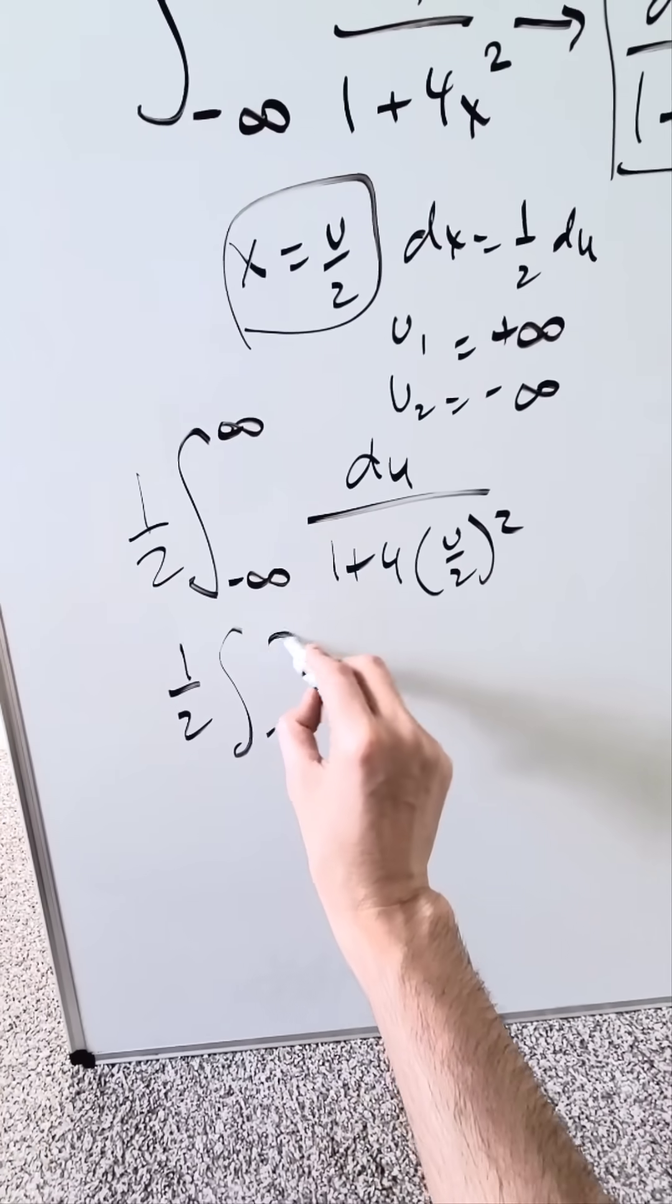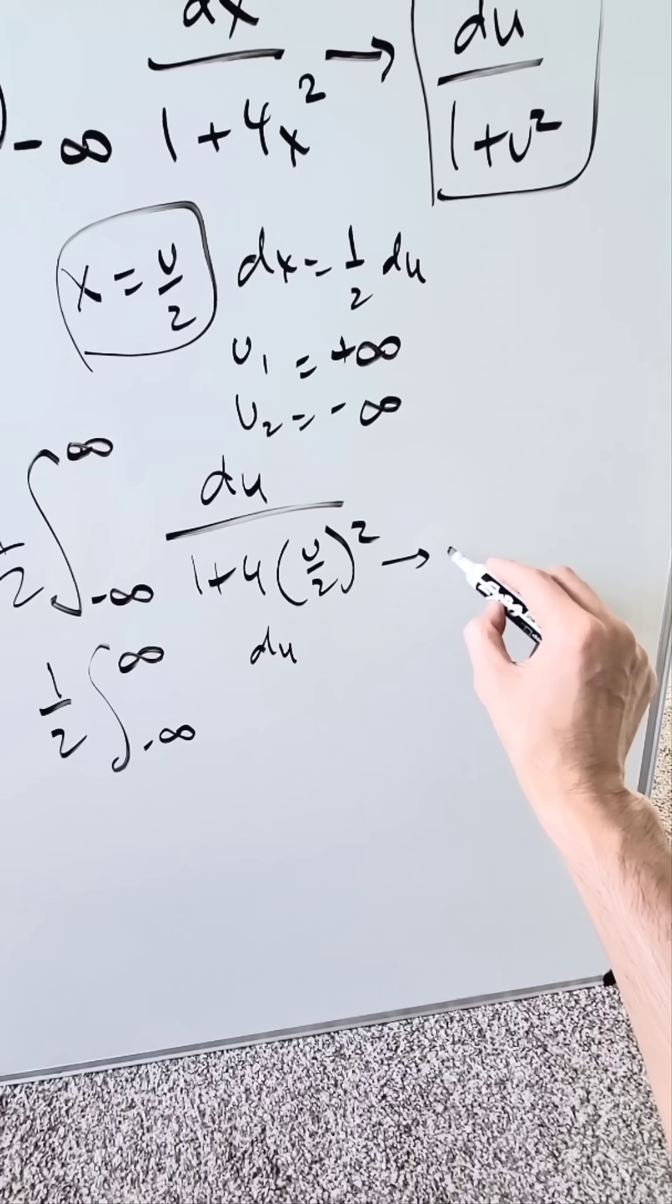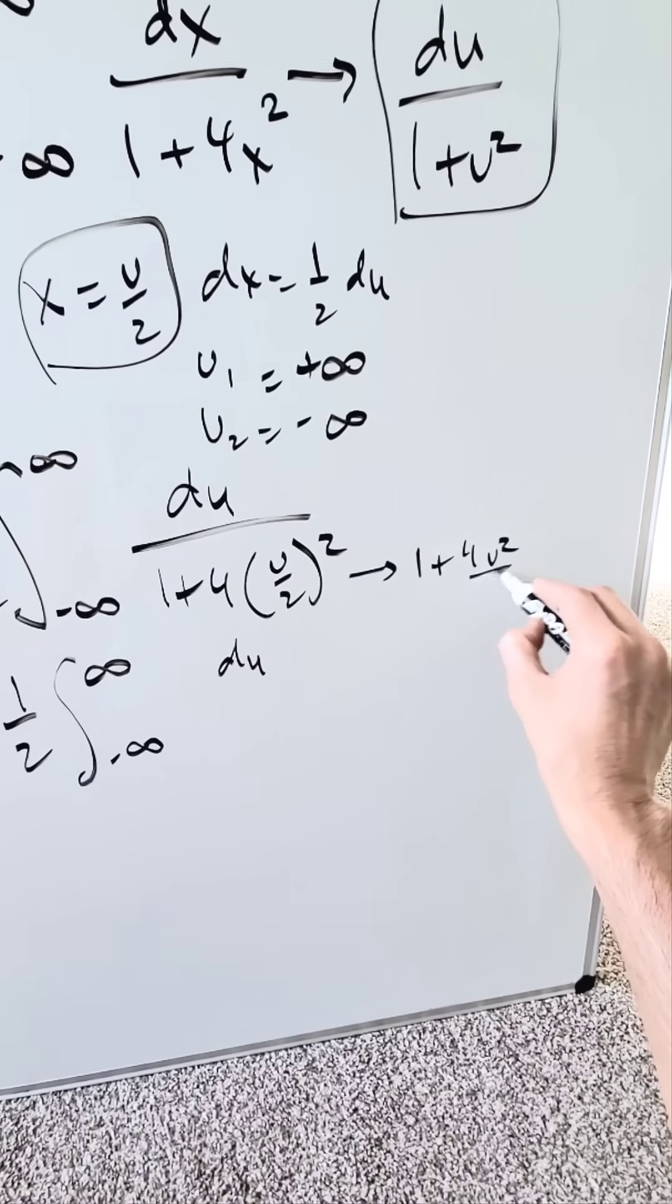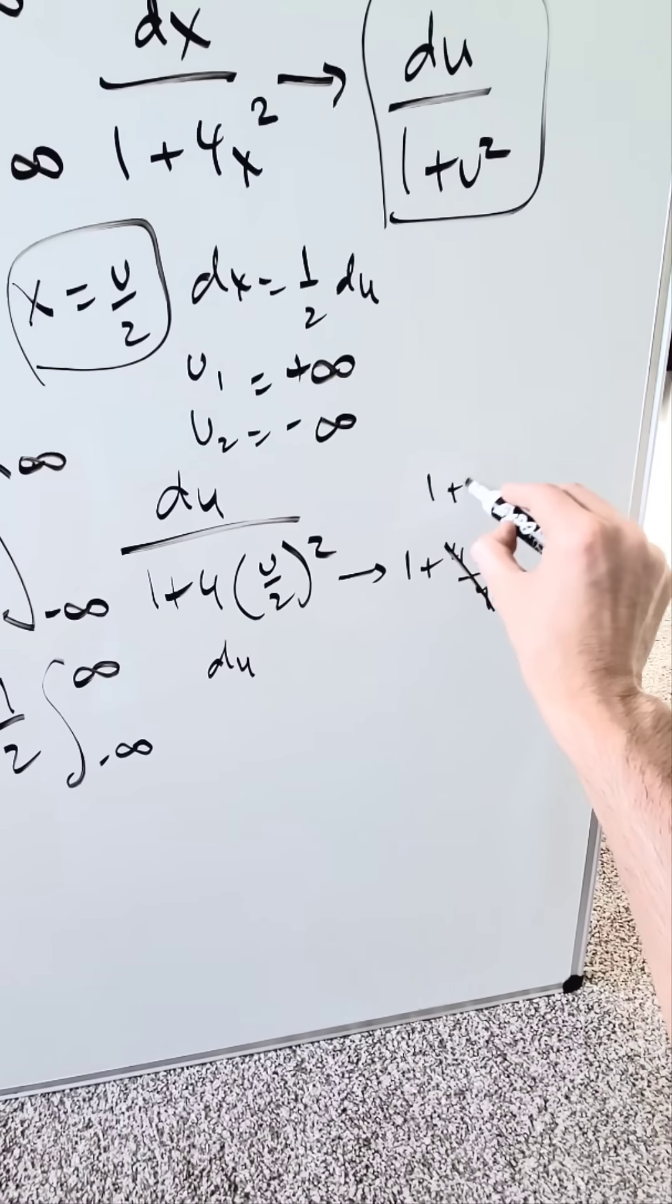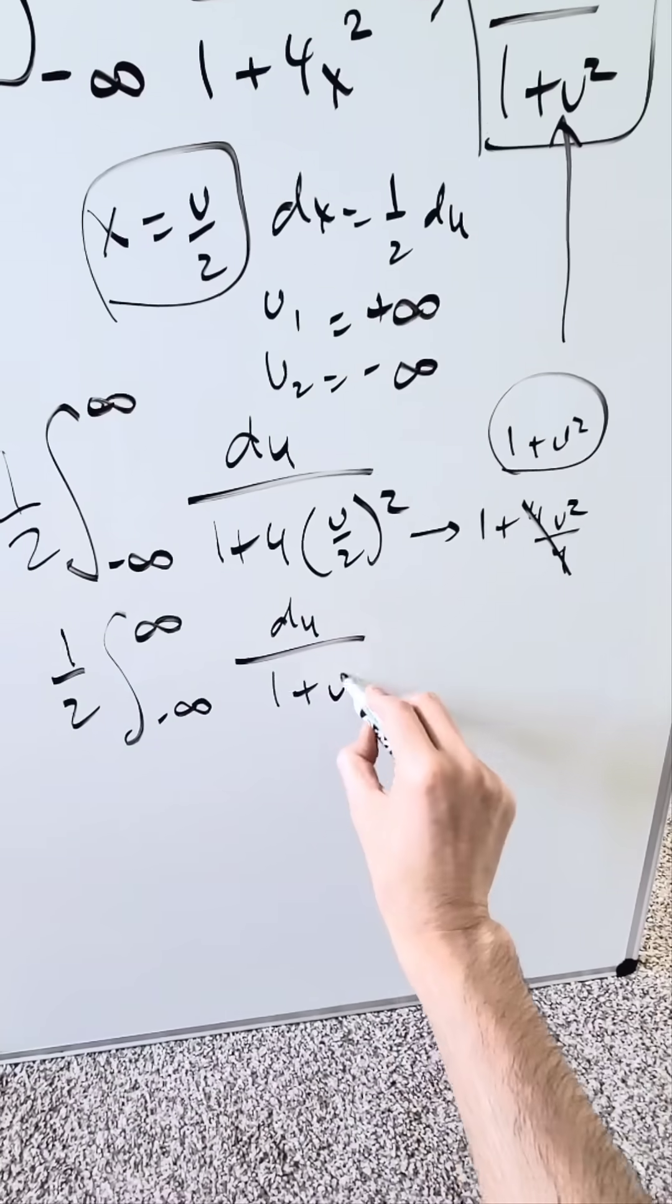Compute this. I have here minus infinity to infinity du. Let's look in the denominator. It will be 1 plus 4u squared over 4, which will cancel out. You'll have 1 plus u squared, which is exactly what I wanted in the denominator.